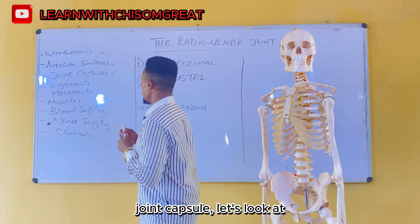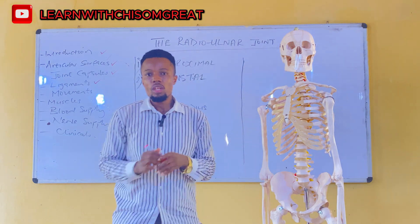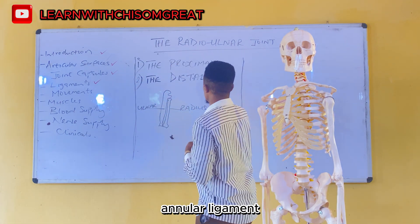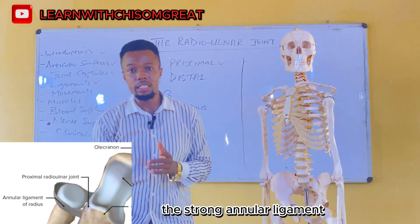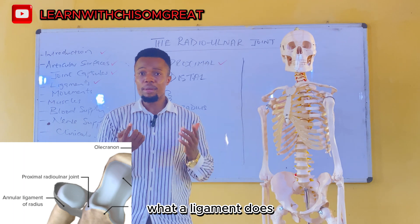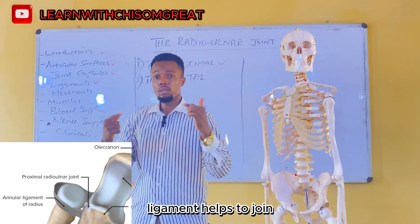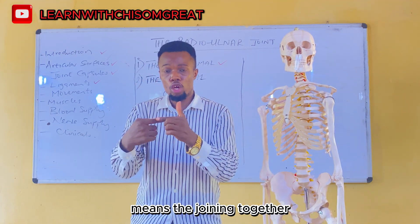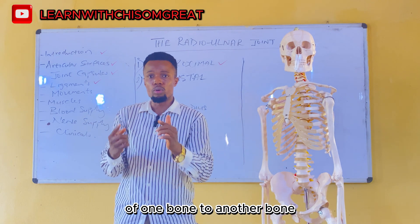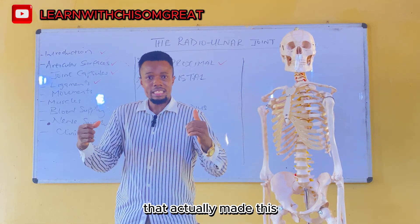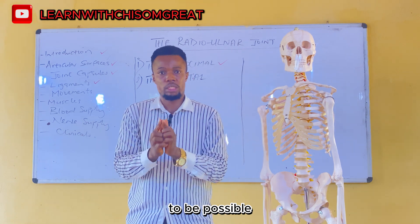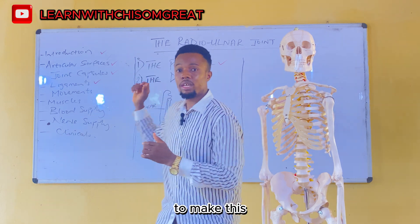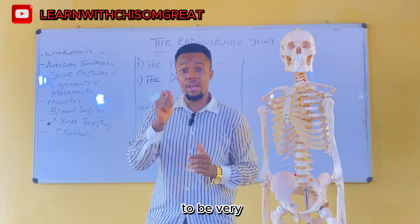The ligament of the proximal radioulnar joint is the strong annular ligament. Ligaments help to join one bone to another bone, and the strong annular ligament is there to make the proximal radioulnar joint very stable.